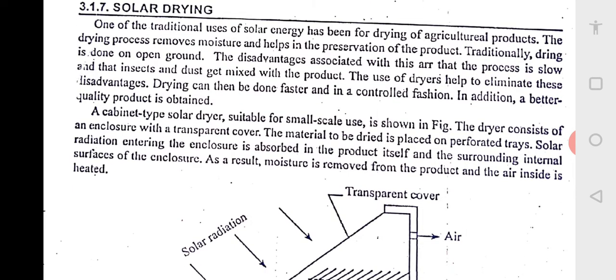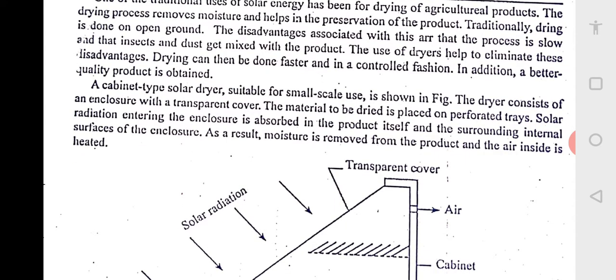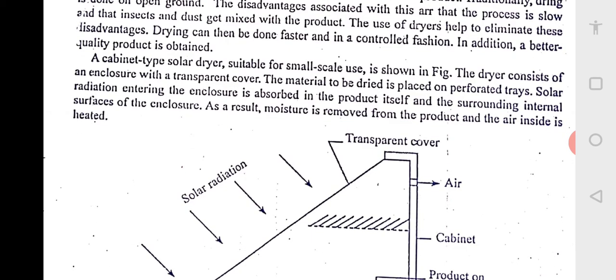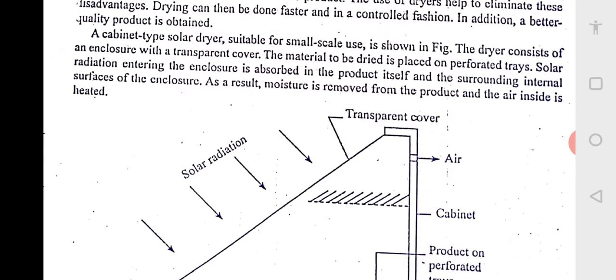Mostly for agriculture products. It helps in removing of the moisture and instead of open ground, there are disadvantages: insects and dust get mixed into the product. That is why the solar dryers have come into picture. Not only this, the solar dryers will speed up the drying process also. It can be done faster and in a better controlled fashion.